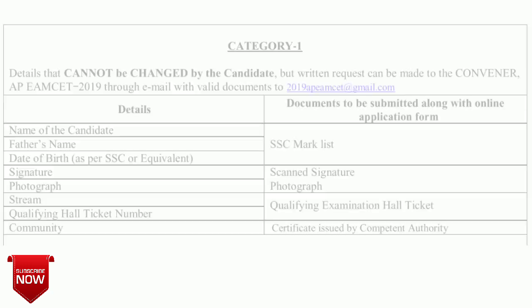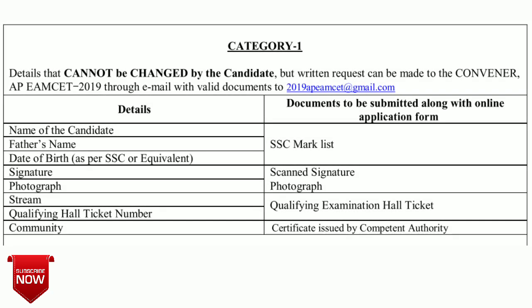There are two categories. Category 1 covers the details that cannot be changed by the candidate — those details can be changed by the convenor only. You need to mail the particular document in order to change those details. For example, if you have committed a mistake in the name of the candidate, you have to submit your SSC marks memo. I will provide the mail ID in the description.